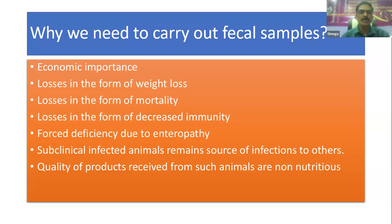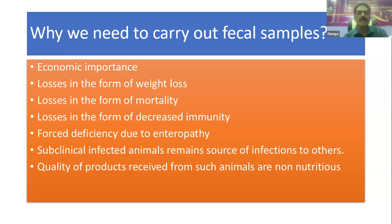There are also losses in the form of decreased immunity — whenever there are a large number of parasites in the intestinal tract, immunity decreases. There is also forced deficiency due to enteropathy; for example, coccidia or tapeworms lead to enteropathy where intestinal villi cannot absorb proper nutrition, causing deficiency of different minerals and vitamins. Subclinical infections remain in animals and act as a source of infection to others. If animals are infected by parasites, the meat obtained will have very poor nutritional value. For all these reasons, we need to find the different parasites present in the intestines of sheep and goats through fecal sample examination.